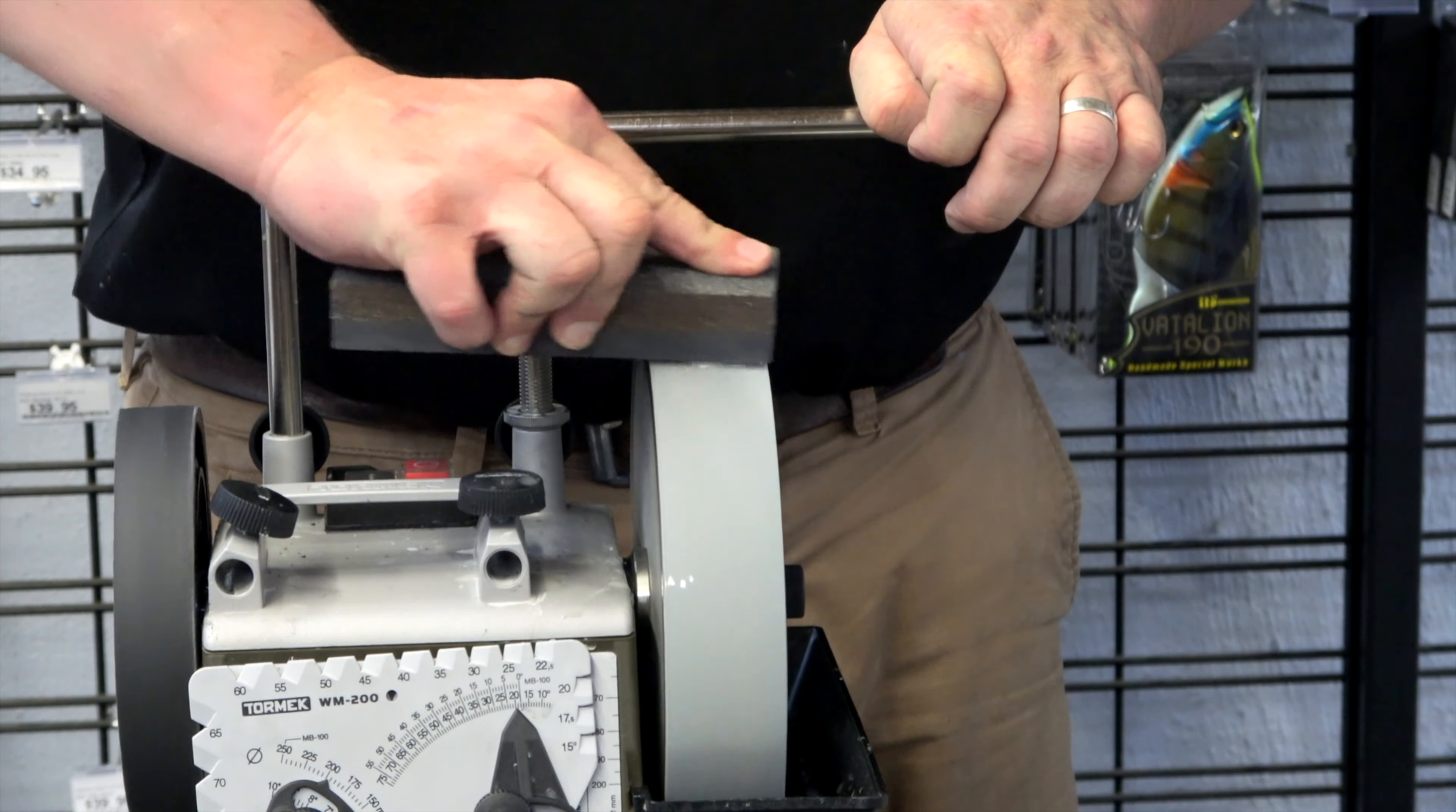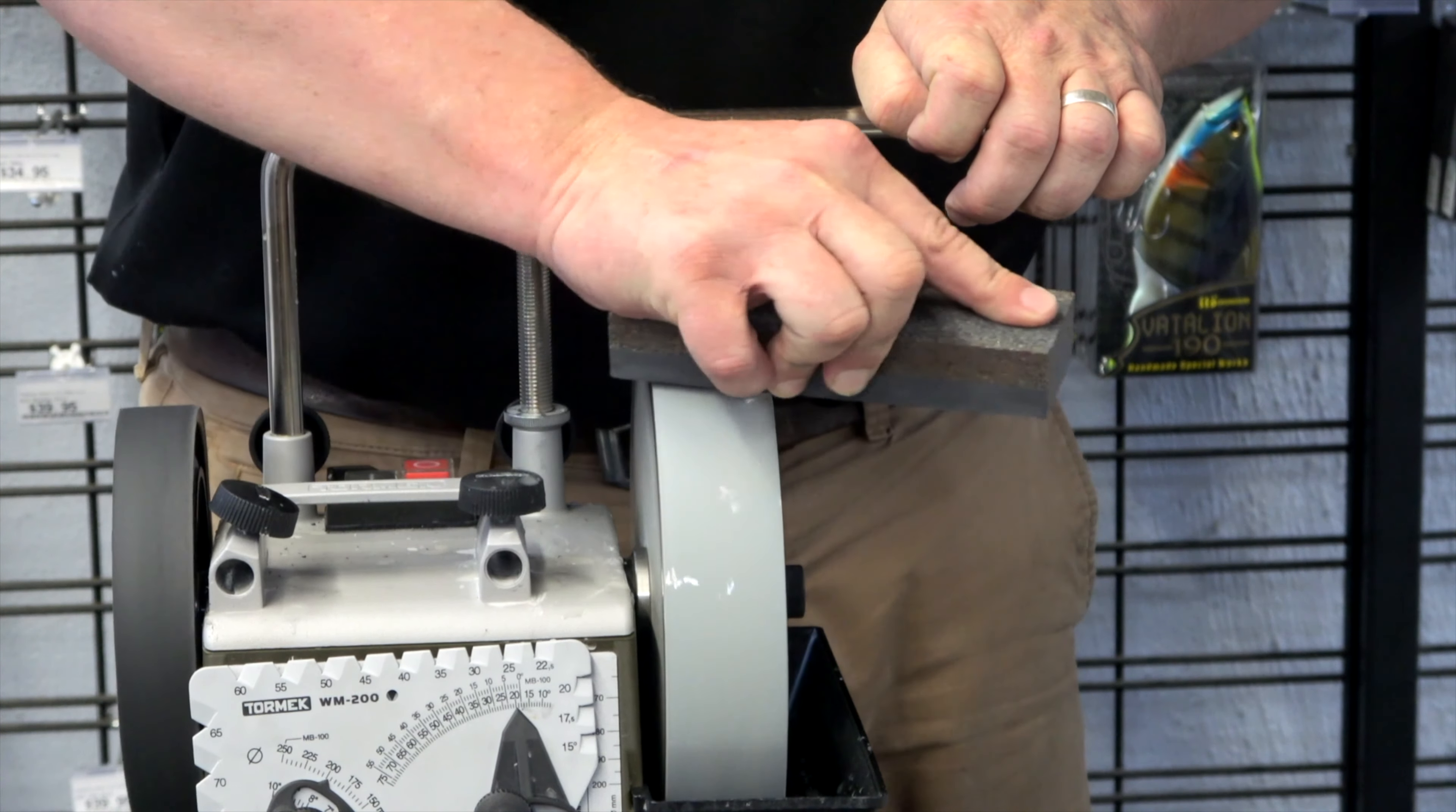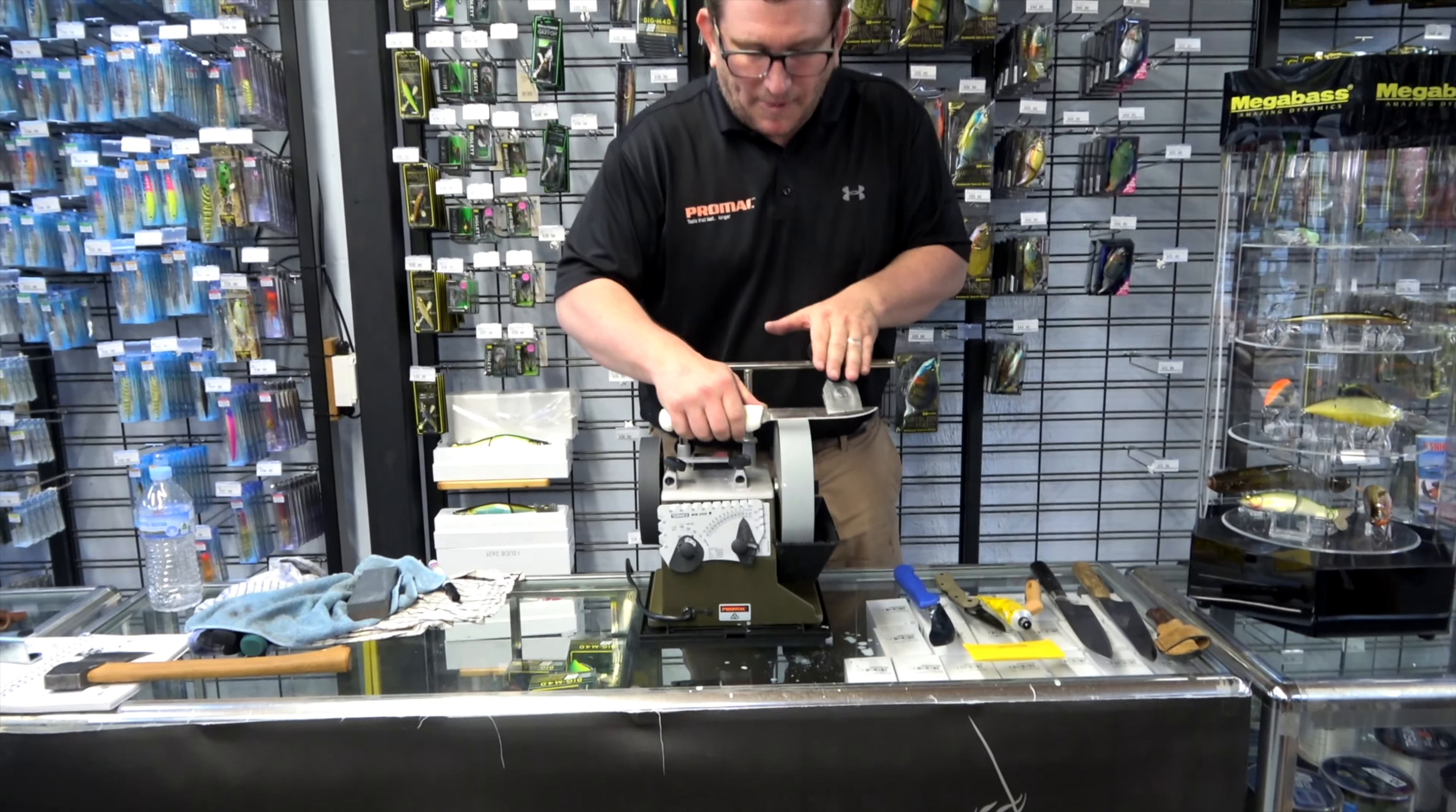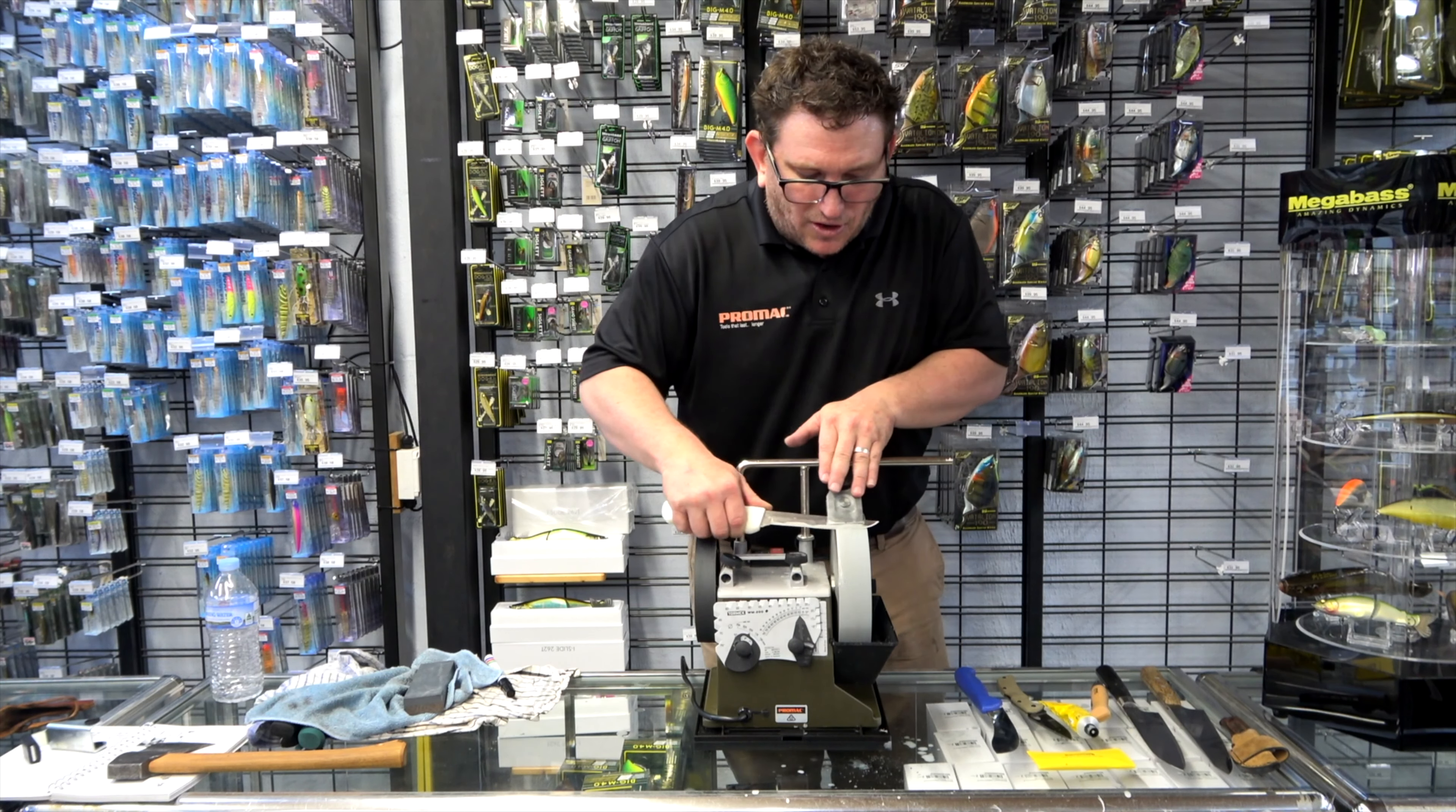During the sharpening process, the thousand grit is preferable. Because once we're finished with the thousand grit, we're going to be taking this knife over to the leather strop. So when you touch the wheel, you'll feel the wheel is considerably different from the 220 to the thousand grit. And you'll also hear that the wheel is not as aggressive on the edge of the knife.